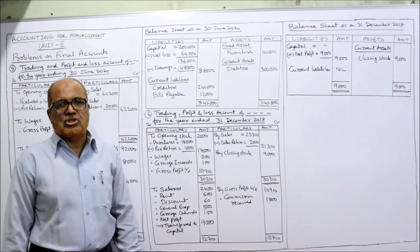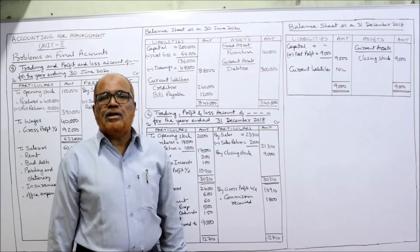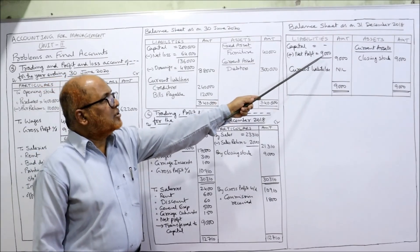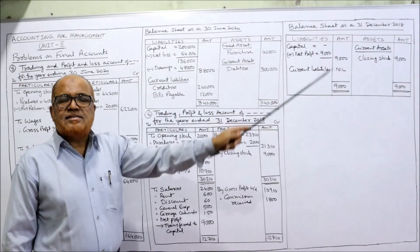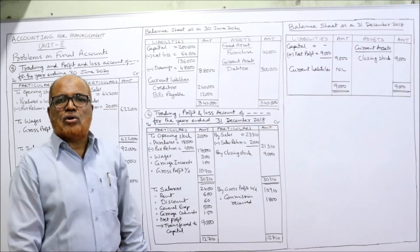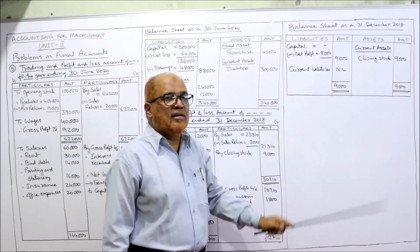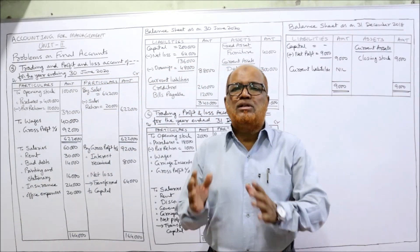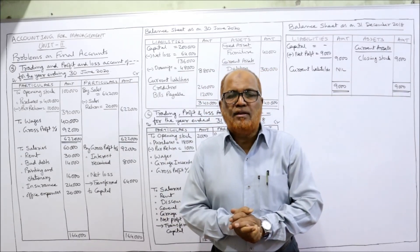In the balance sheet, capital is not given at all in this problem, so put a dash. Add net profit of 9,000 — outer column shows 9,000. There are no current liabilities or any other liabilities given. On the asset side, there is only one asset — closing stock of 9,000. So 9,000 is on the asset side and 9,000 is on the liability side. Balance sheet is tallied. We have completed two problems — problem five and problem six. We will continue with the next problem in the next video.